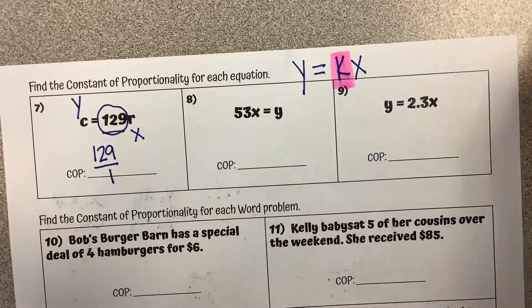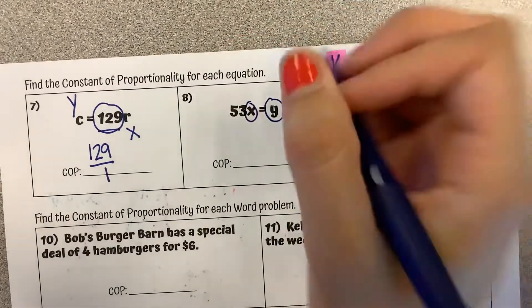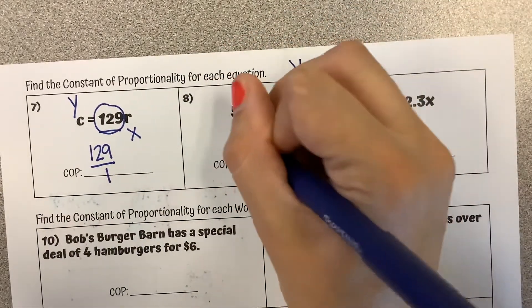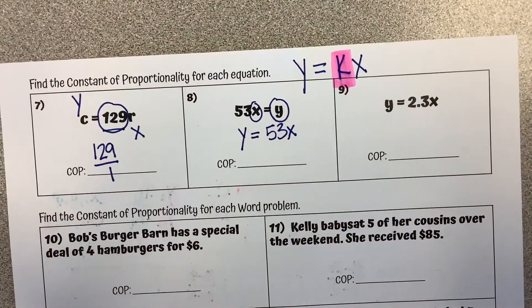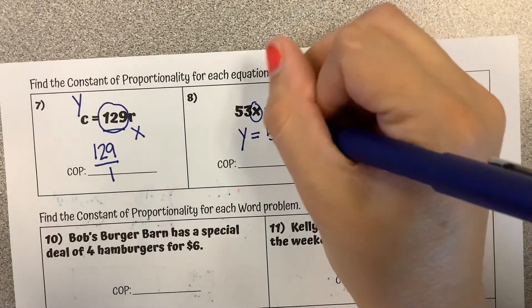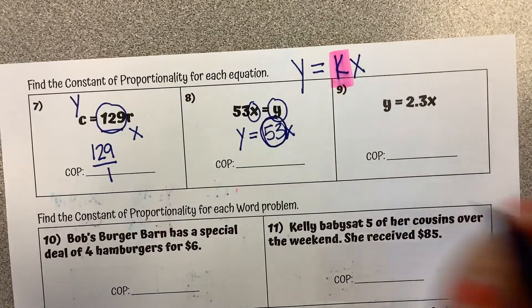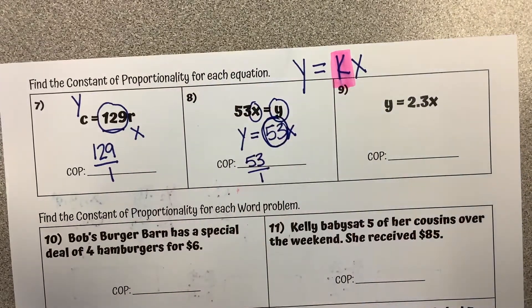Here it's flipped around but our y is over here our x is over here. So this is the same thing as saying y equals 53x. So for our constant of proportionality we're looking at what is being multiplied by x. It's that 53. So it's 53. I'm going to write it as 53 over 1.